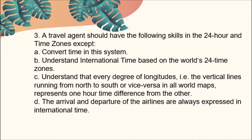Number three: A travel agent should have the following skills in the 24-hour and time zones except: A, convert time in this system; B, understand international time based on the world's 24 time zones; C, understand that every degree of longitude — the vertical lines running from north to south or vice versa in all world maps — represents one hour time difference from the other; Letter D, the arrival and departure of the airlines are always expressed in international time. The answer is Letter D — local time, not international time.